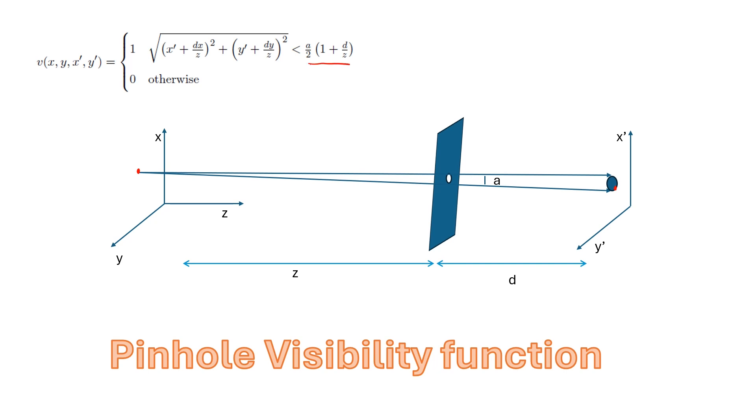The size of the pinhole increases due to this angular projection by the factor 1 plus D over Z going from the pinhole to the measurement plane. So the visibility between the points (X,Y) in the object plane and (X',Y') in the measurement plane is the scaled version of the circ function as shown here with this adjusted radius due to the projection of the pinhole.